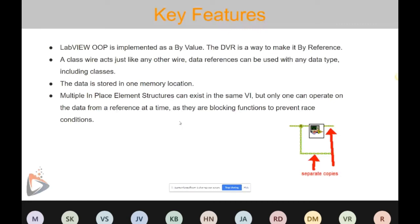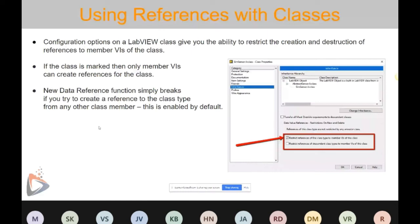When using DVR with classes, go to class properties and inheritance — you will see 'Restrict reference of your class type to member VIs of this class.' This restricts the ability to create or destroy a reference to that specific class member. If you try to create or destroy a DVR reference in another class member, the New Data Value Reference function simply breaks and won't allow it. By default this option is enabled, so make sure to check this setting when working with DVR.